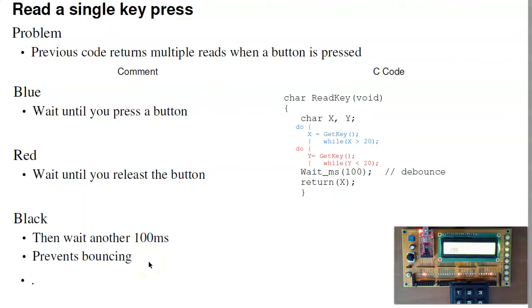Next, the problem with get key is I'm getting the same key over and over again. So if I hold down the 2 button, I get 2, 2, 2, 2. To just get a single reading, when I hit the key, I just want to get a single number. I can do the following.